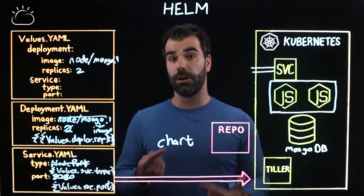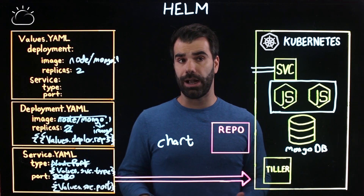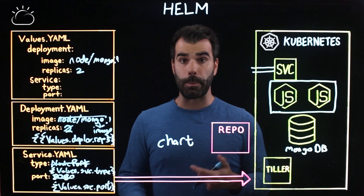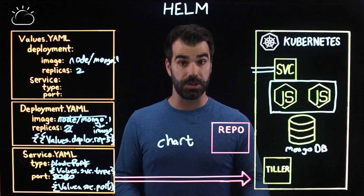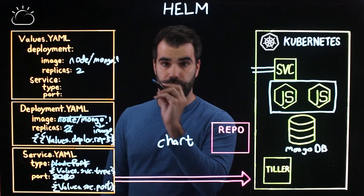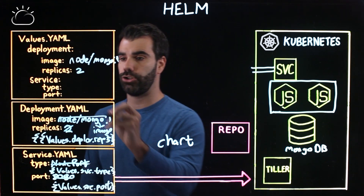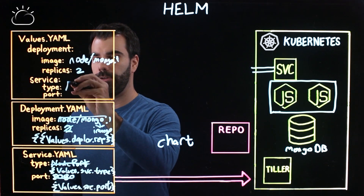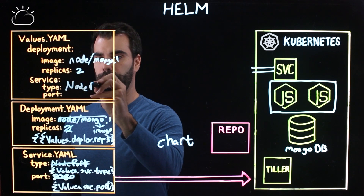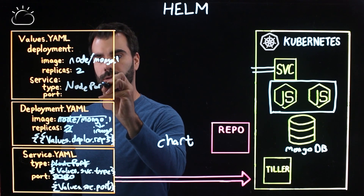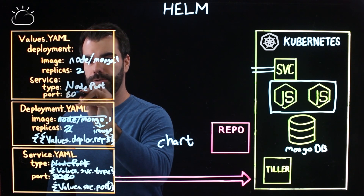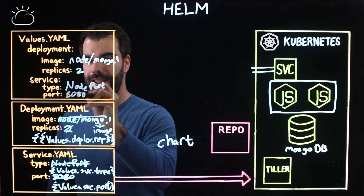This means that for a developer on this project, or somebody working infrastructure and making sure this is deployed fresh, you can simply have them change the configuration. For example, you'd just write node port here, and for the port you'd choose 8080.